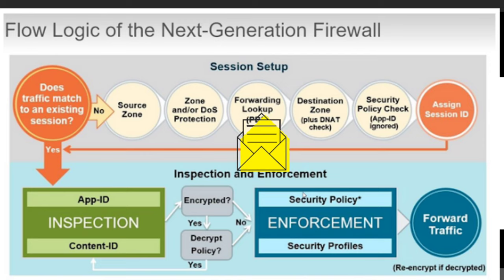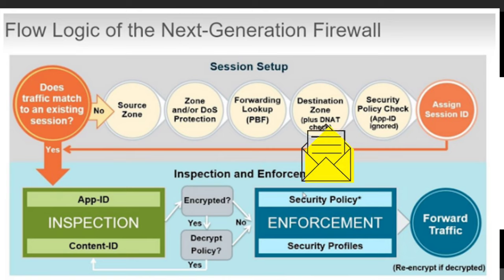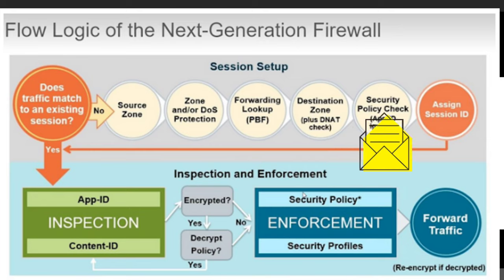The third step is forward lookup and policy-based forwarding. At this stage, the firewall determines the packet forwarding path. If policy-based forwarding is configured, forwarding happens according to the given interface setup — layer 2, layer 3, virtual wire, tap, tunnel, etc. Then the destination zone and DNAT check occurs, where the firewall checks which destination zone the packet is destined for and whether the packet has destination NAT configured.